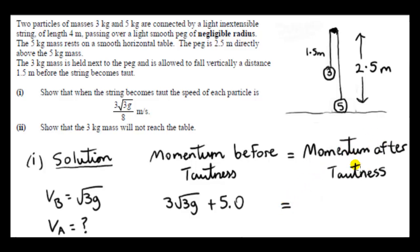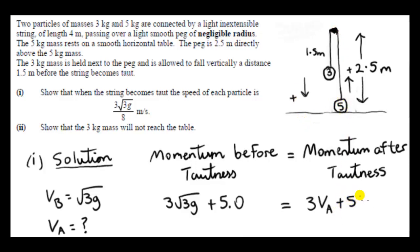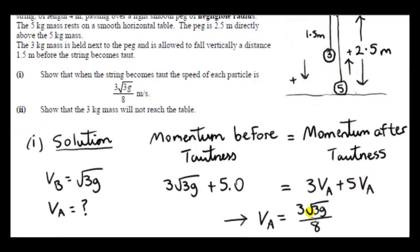Now for the momentum after the string becomes taut. The momentum of the 3 kg mass is 3 × VA. The 5 kg mass now has a velocity — it's lifted up slightly — and its velocity equals VA (same magnitude, since the string is inextensible), giving momentum 5 × VA. Upwards is positive for the 5 kg mass and downwards for the 3 kg. We solve this equation to get the desired result.